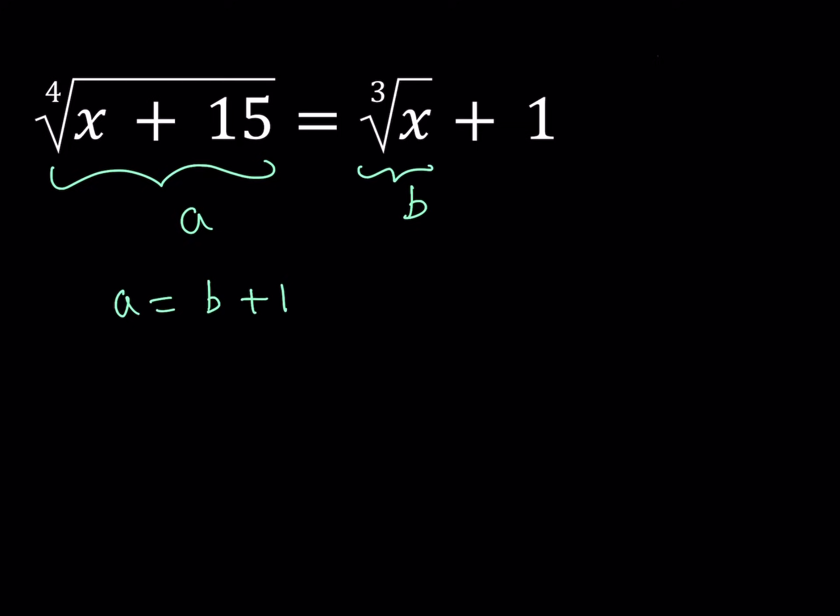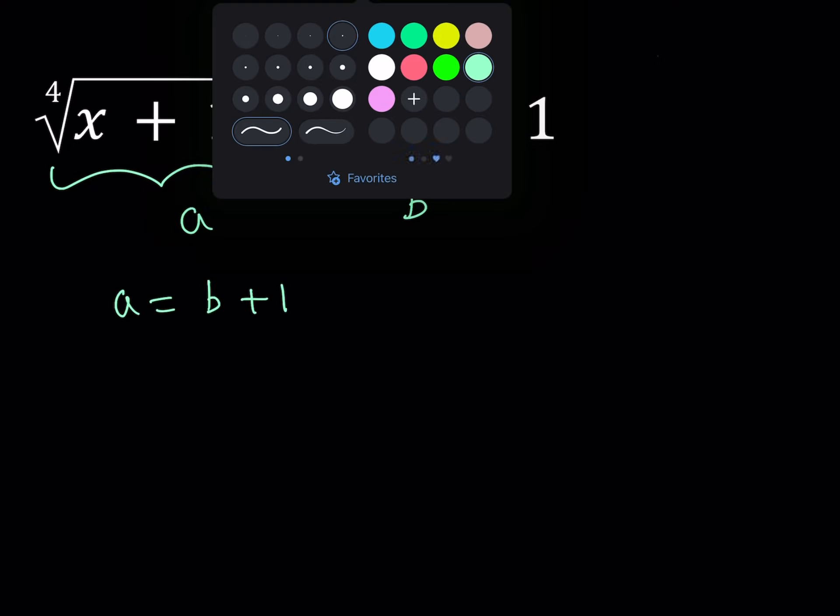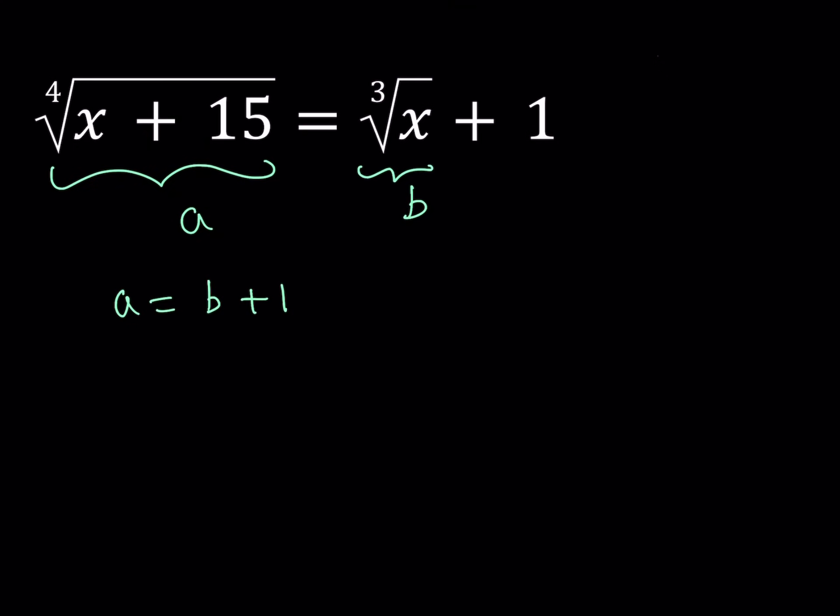But, that's not the end of it. We get more information. So, let's go ahead and take a look at that. What do we get? Well, the first one gives us the 4th root of x plus 15 is equal to A. So, if I raise both sides to the 4th power, then I should be getting something like x plus 15 equals A to the 4th power. Great.